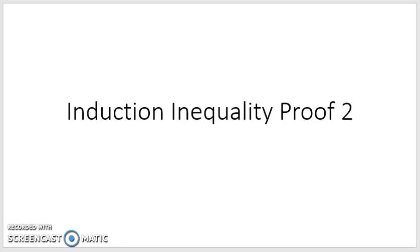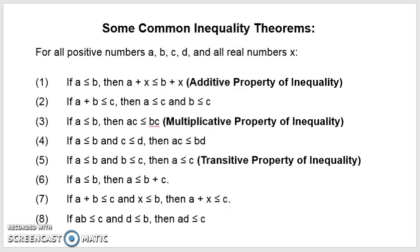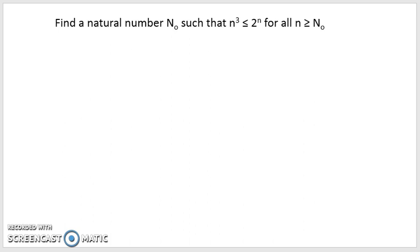This is a second induction inequality proof. Remember that we want to focus on the use of these inequality theorems — the theorems that actually justify the steps in our inequality proof. The problem I'd like to focus on today is: prove that, first of all, find a natural number n0 such that n cubed is less than 2 to the n, for all n greater than or equal to n0.